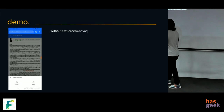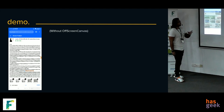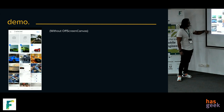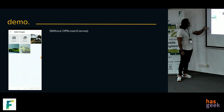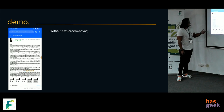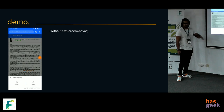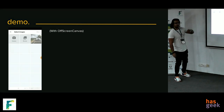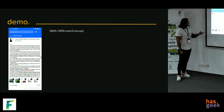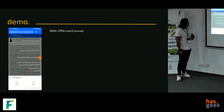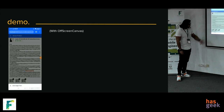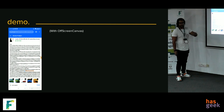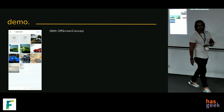Let's compare resizing and resampling on the main thread versus using OffscreenCanvas. When running on the main thread, after selecting images you can see thumbnails haven't appeared yet because resizing is running in the background on the main thread. With OffscreenCanvas, after selecting the same images the thumbnails arrive much faster because all this code runs in a different worker context.